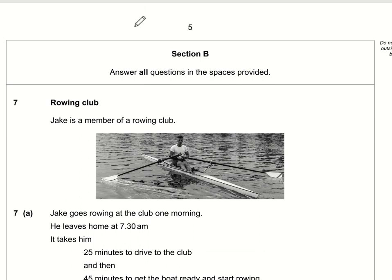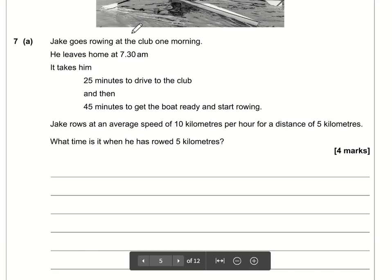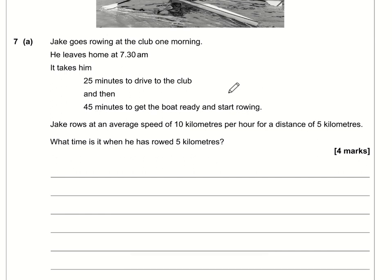Moving on to section B. Jake's a member of a rowing club. Jake goes rowing at the club one morning. He leaves home at 7:30. It takes him 25 minutes to drive to the club. So therefore 7:30 plus 25 minutes means he's getting to the club at 7:55. It then takes him 45 minutes to get the boat ready and start rowing. So therefore if we add 45 minutes to 7:55 that means he's ready to start rowing at 8:40.